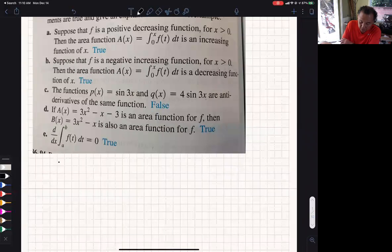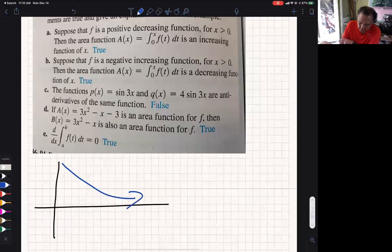This is 5.4, number 85. Suppose f is a positive decreasing function. So I'm just going to draw a picture. I don't know what it looks like, but I know it's positive and decreasing, so I'm just going to do that. There we go.